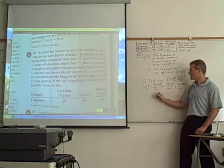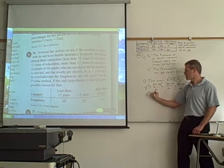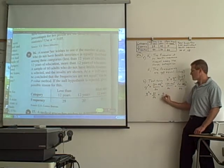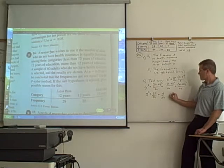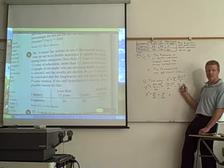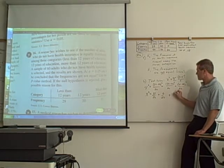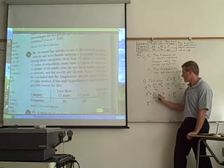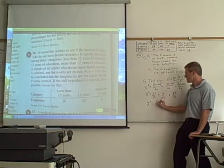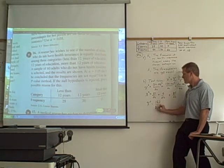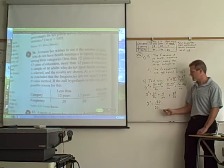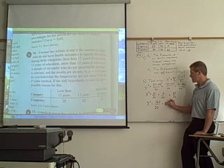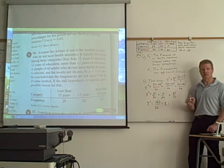So this is 9 squared, that would be 81 over 20. This would be 0 over 20. 11 minus 20 is negative 9 squared, that would be 81 over 20. We add those together. 81 plus 0 is 81, that's 162 over 20. Or if we divide that, that would be 8 and two-twentieths, or 8 and one-tenths. That should come out to 8.1. That's your test value.